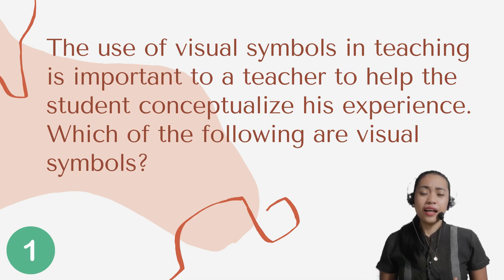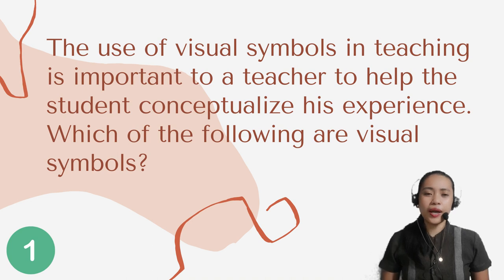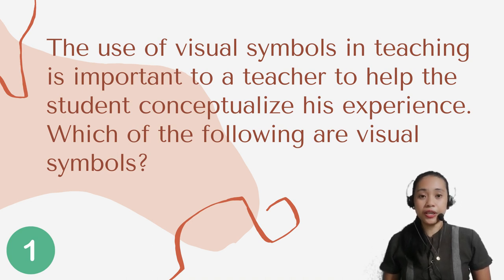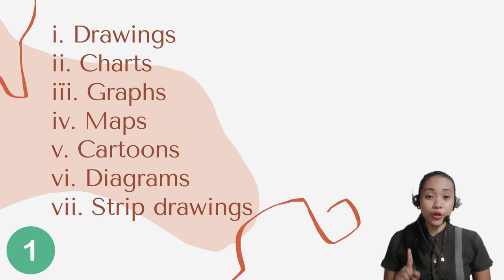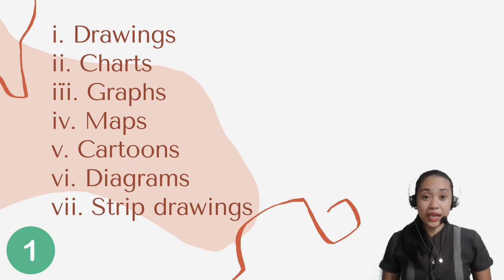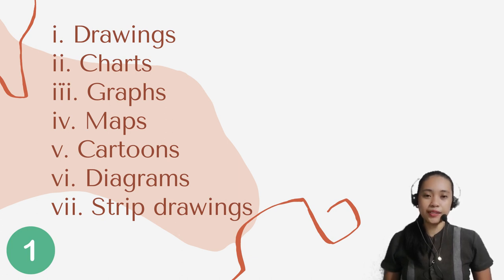Question number 1. The use of visual symbols in teaching is important to a teacher to help the student conceptualize his experience. Which of the following are visual symbols? Number 1: Drawings. Number 2: Charts. Number 3: Graphs. Number 4: Maps. Number 5: Cartoons. Number 6: Diagrams. And number 7: Strip Drawings.